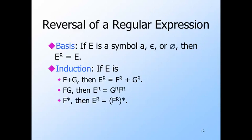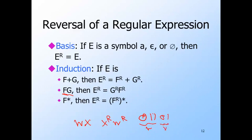Concatenation is a little trickier. To reverse a string WX, where W comes from expression F and X comes from G, you need to reverse W and reverse X, but then you need to flip the order of the reversed strings — that is, X reversed comes before W reversed. For example, if W is 011 and X is 01, then W reversed is 110 and X reversed is 10, but X has to come first. So the reverse of 011 concatenated with 01 is in fact 10110. For the star, we reverse the expression F that is starred, so it now produces the reverses of all the strings that F produces. We then star the reversed expression to get concatenation of any number of the reverse strings in any order.